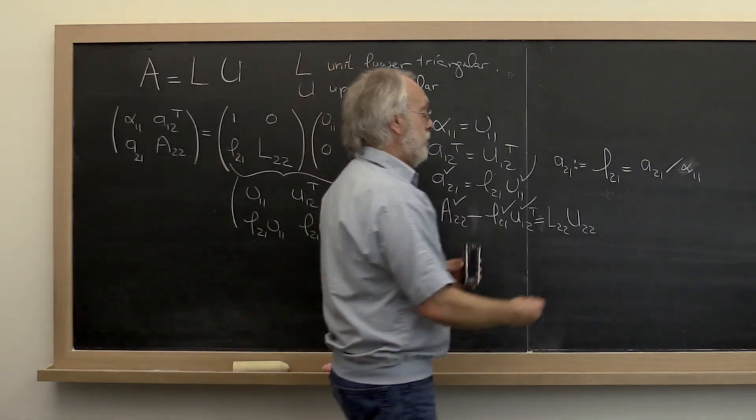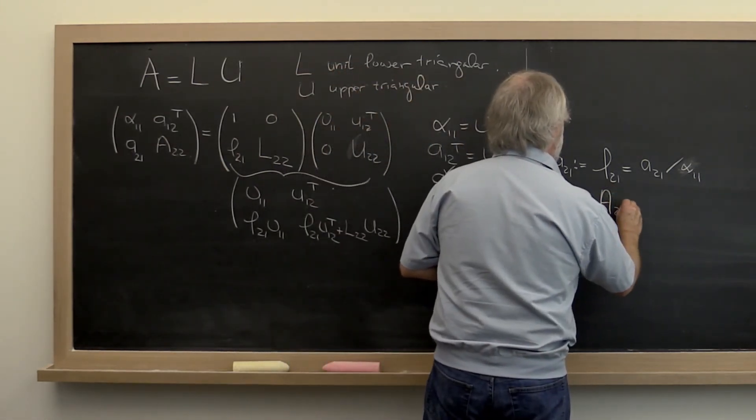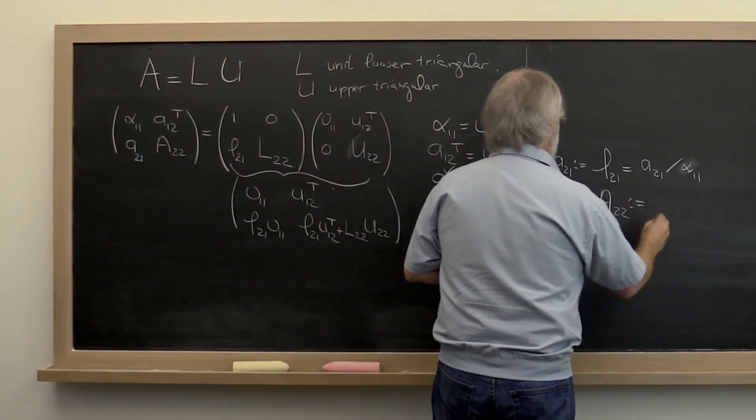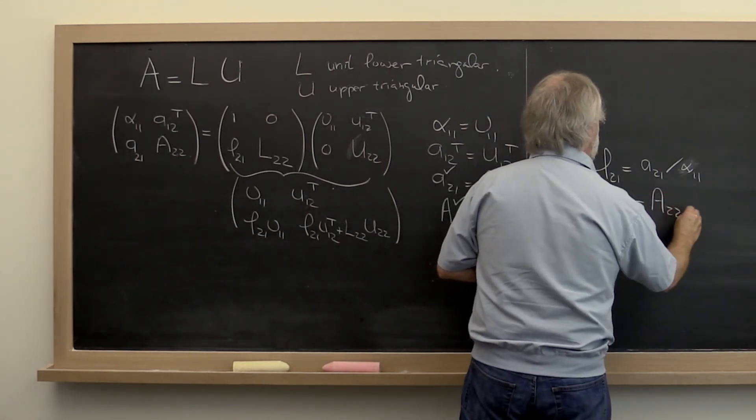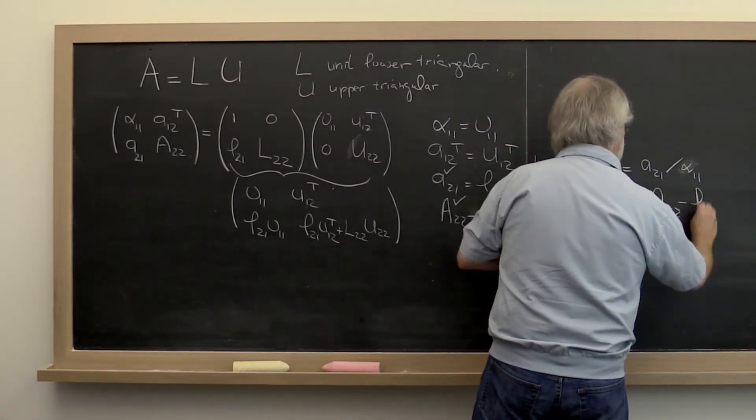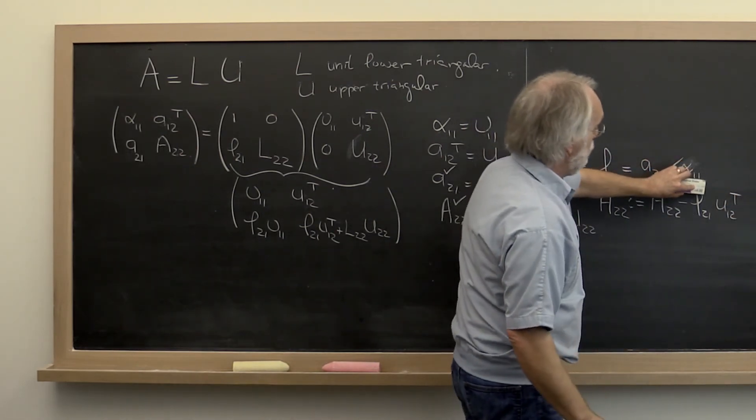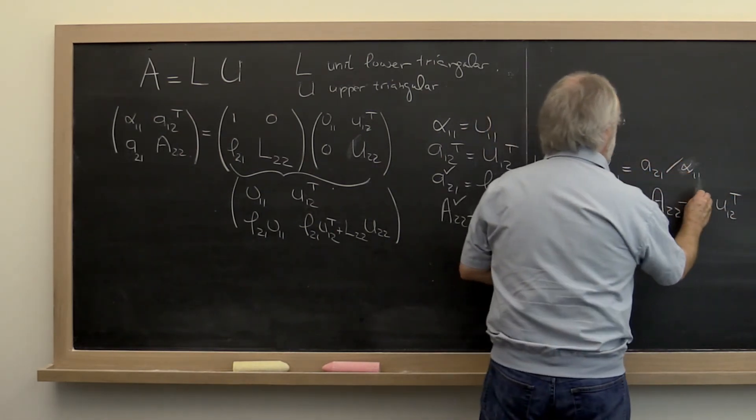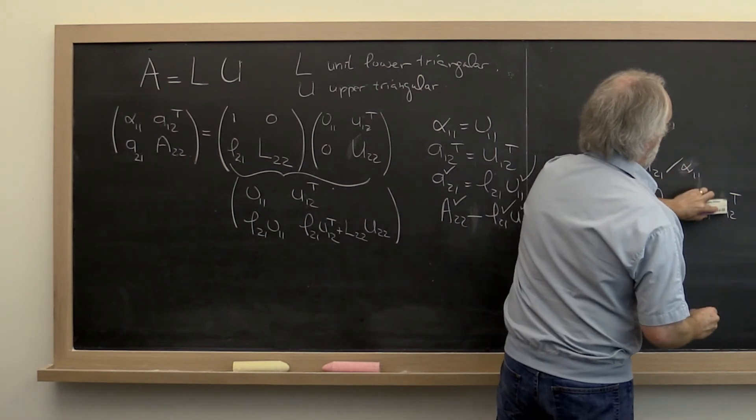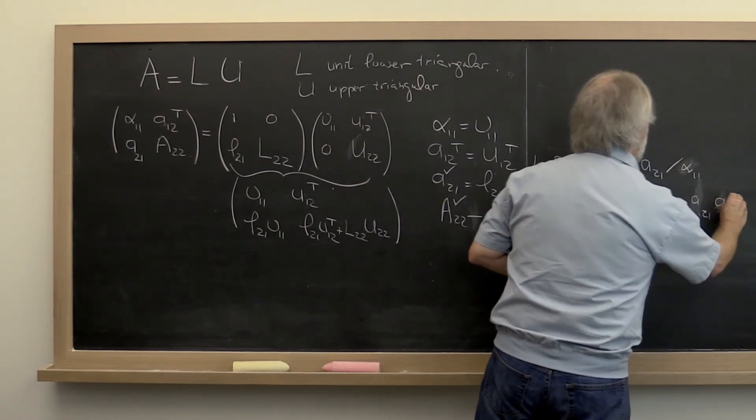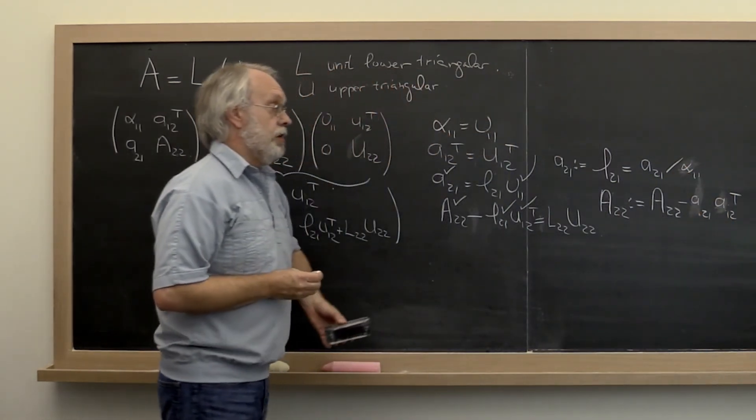So in the current step, we update A 2 2 by subtracting off L 2 1 times U 1 2 transpose. But L 2 1 is stored in A 2 1 and U 1 2 transpose is stored in A 1 2 transpose. And therefore we get that. And then we move on.